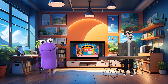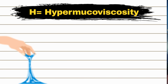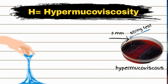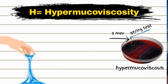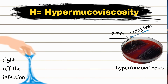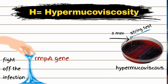Next, H for hypermucoviscosity. Imagine Klebsiella producing so much slime that it forms sticky webs. In the lab, we use the string test — if you lift a colony with a loop and it stretches into a string over 5 millimeters, it's hypermucoviscous. This slime makes it tough for our body to fight off the infection. Hypervirulent strains, especially with the RMPA gene, are super sticky, leading to more severe infections.